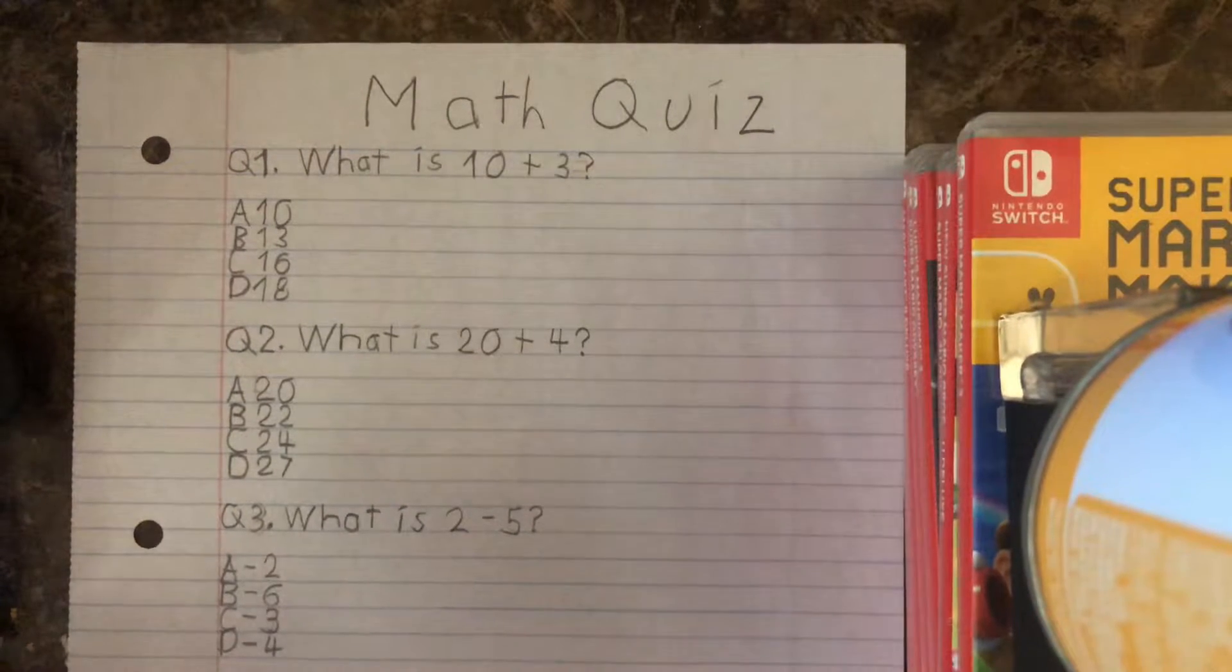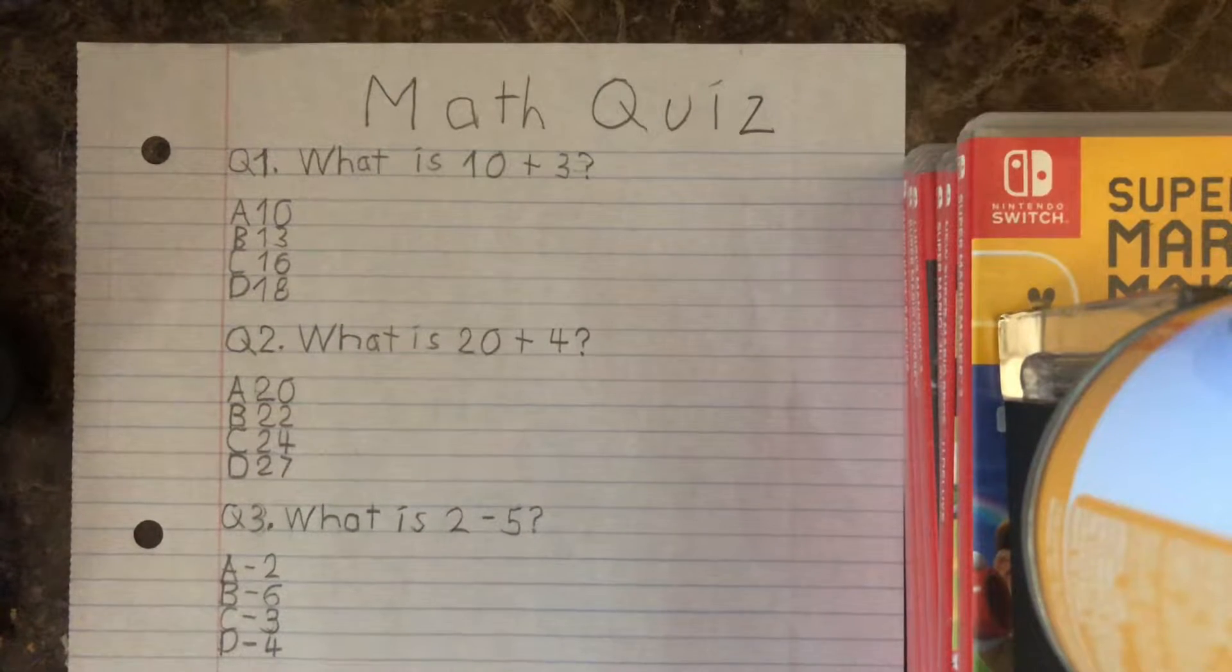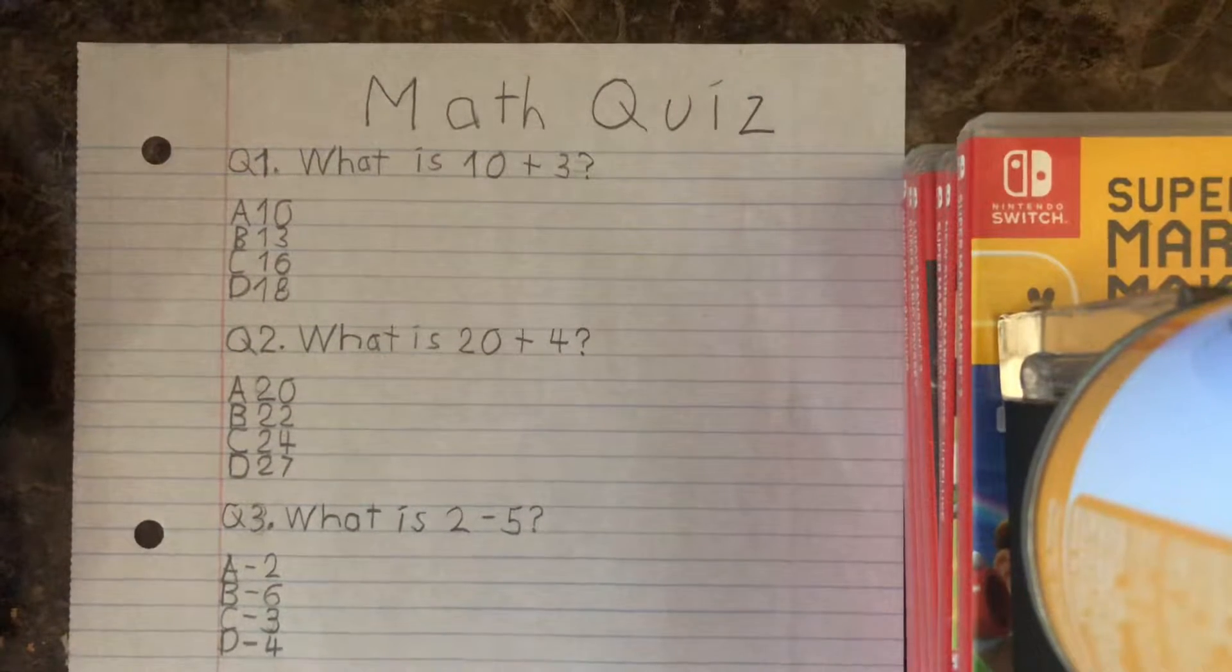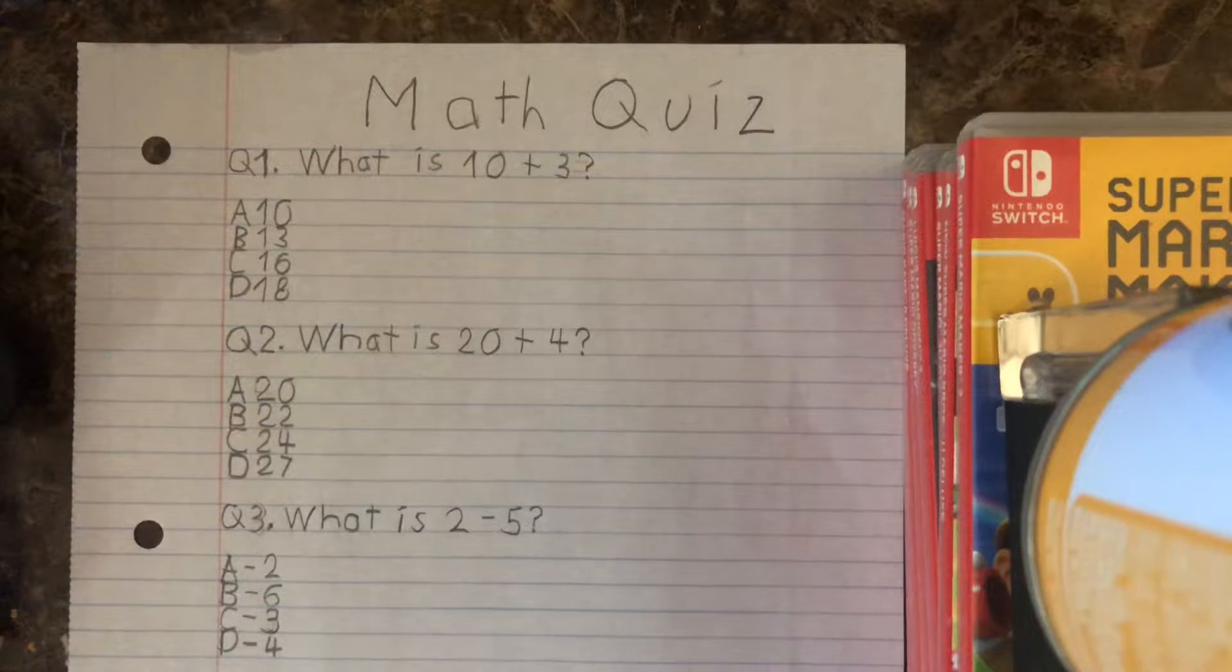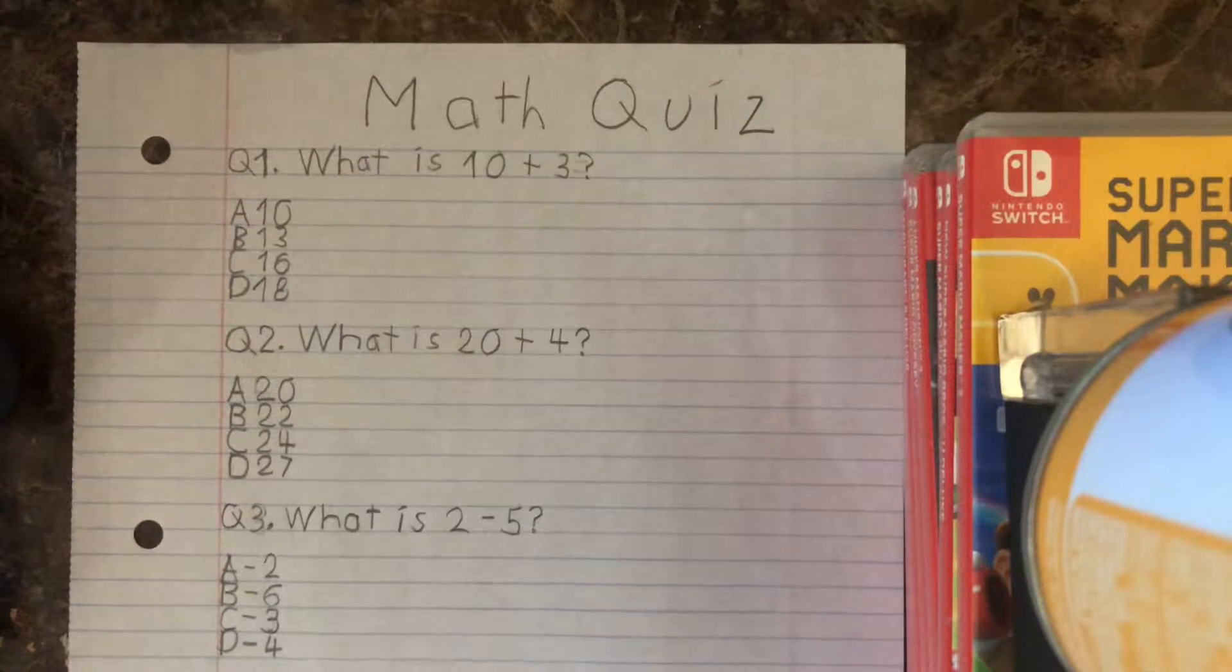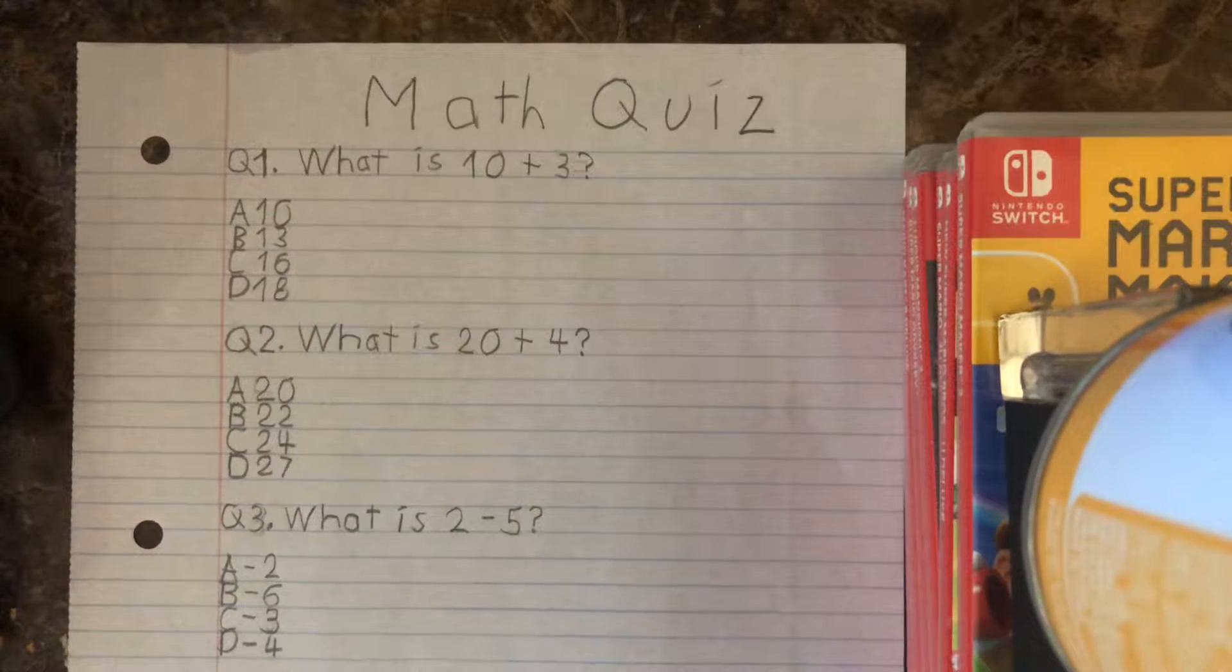Alright, number two. Or should I say question two. What is 20 minus 4? I mean 20 plus 4. A, 20, B, 22, C, 24, or D, 27? I didn't mean to say minus guys, it's okay. Well, what do you think of this answer guys? Let me know in comments below if you guessed the answer.